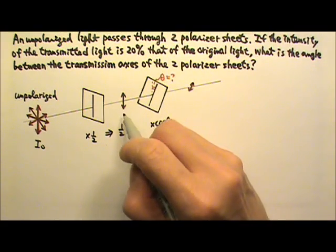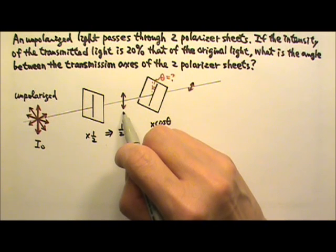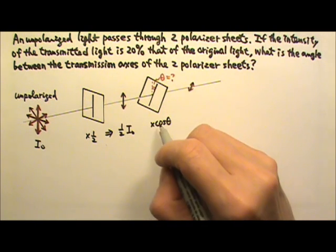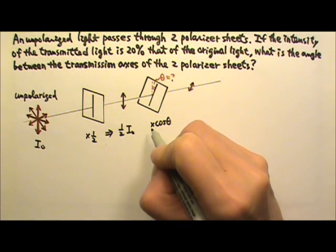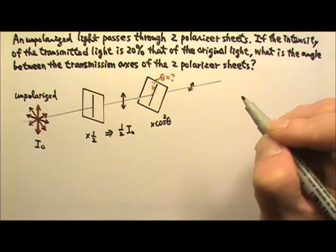The electric field is the amplitude. The intensity is amplitude squared. So for intensity, we need to multiply by cosine squared theta.